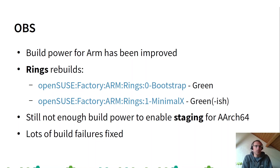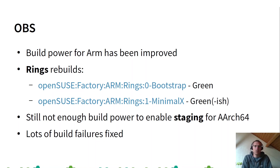We also have rings rebuilds. There are two parts: the smaller part is rings 0, with only the bootstrap packages, which is always green. Rings 1 minimal X is mostly green. Sometimes we have some build failures, and we need to fix them as soon as possible.